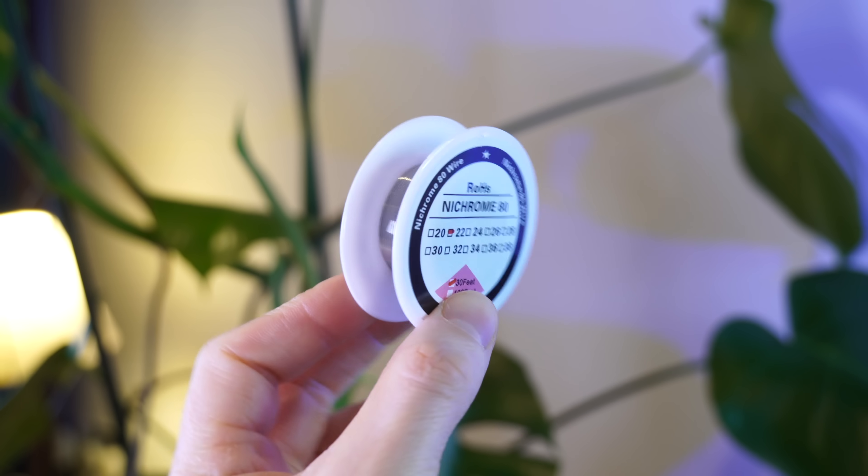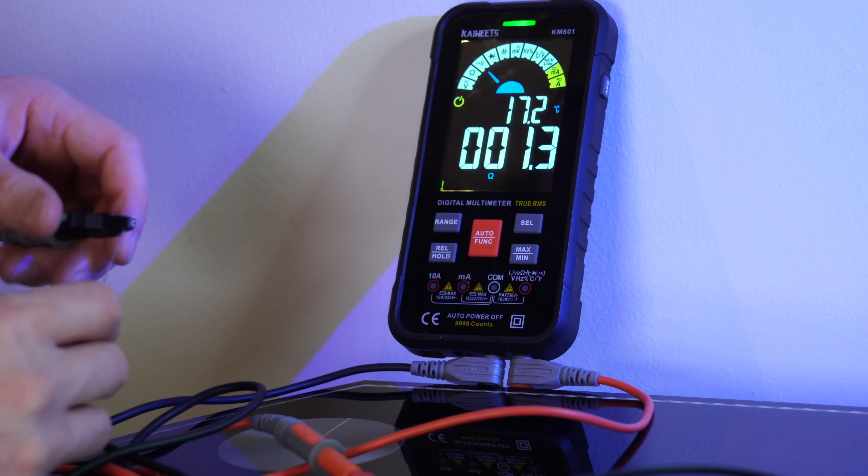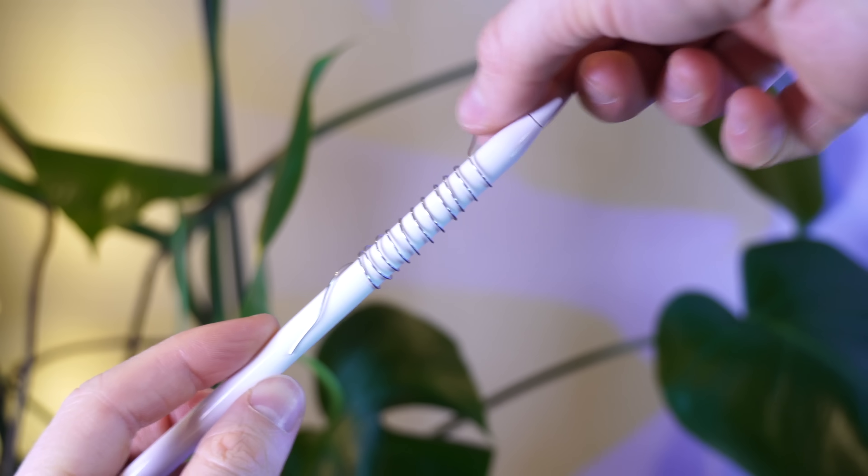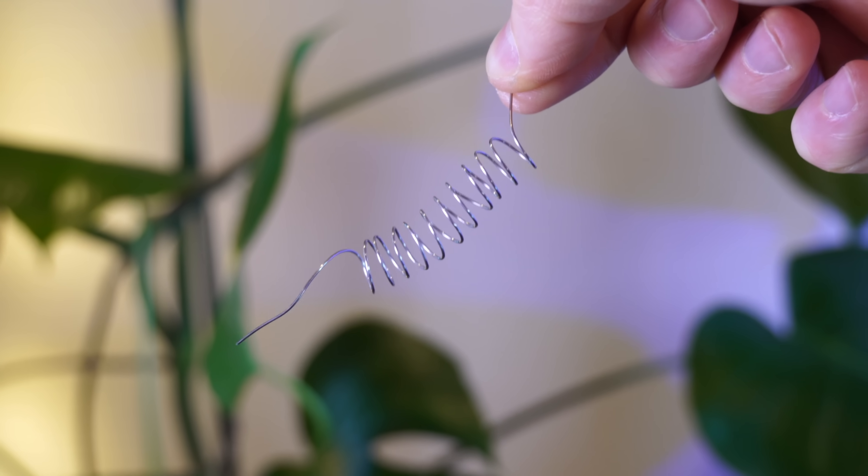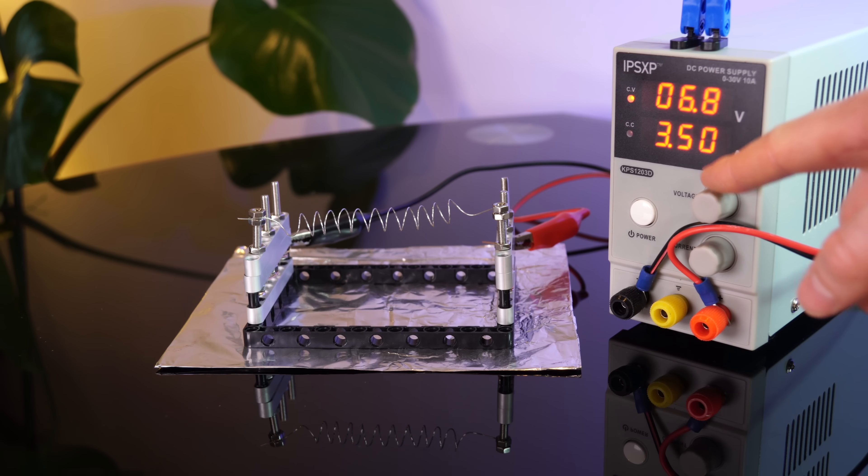Let's try some much thicker 22 gauge wire. This has a lower resistance at 1.3 ohms, which means we can pass a lot more current through it at a given voltage. So once we've made our coil, mounted it, and chucked on the power supply—loads of current, bit of heat coming through.